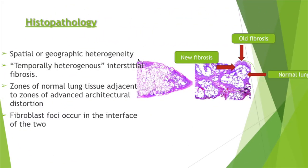Histopathology has always been the gold standard for diagnosis of IPF. It has two characteristic features: spatial or geographic heterogeneity, meaning normal lung interspaced with diseased lung, and temporal heterogeneity, meaning in the same slide you can see fibrosis in different stages — old fibrosis, new fibrosis represented by fibroplastic foci, and normal lung that is gradually going to become fibrosed over time.